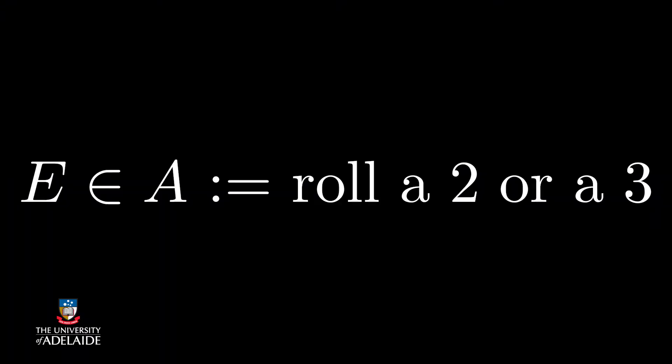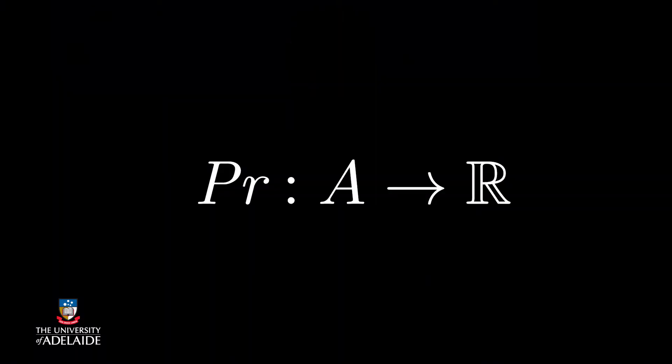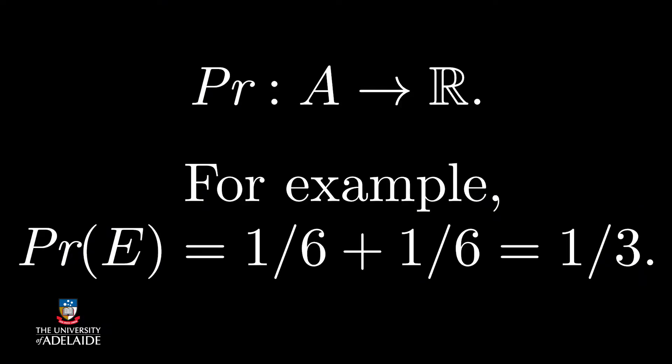For example, the event of rolling one die and getting a 2 or a 3 is an allowable event. We also need a probability function to assign probabilities to events. For example, the probability of the event to roll a 2 or a 3 is the sum of the two individual events, which in total is 1 over 3.